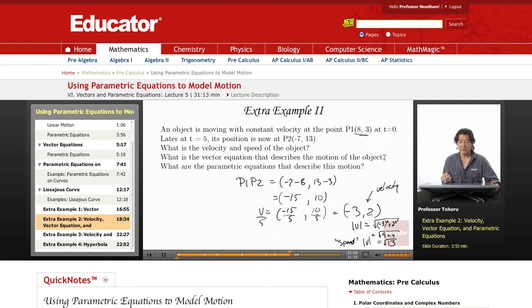And what else do we need to know? What is the vector equation that describes the motion of this object? So what is its initial point, 8, 3? So the vector equation becomes this. Its initial point, 8, 3, plus t times the velocity term, which is negative 3, 2. That becomes our vector equation. This is our vector equation.